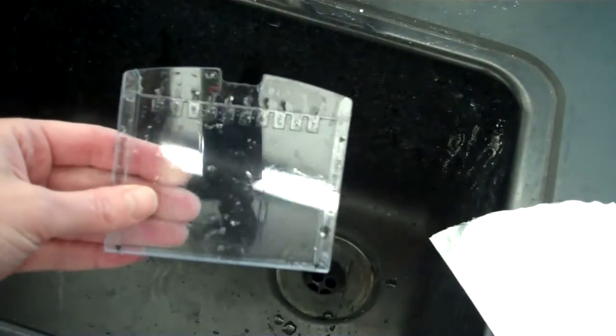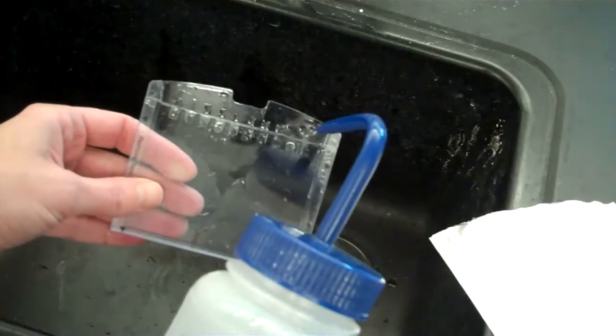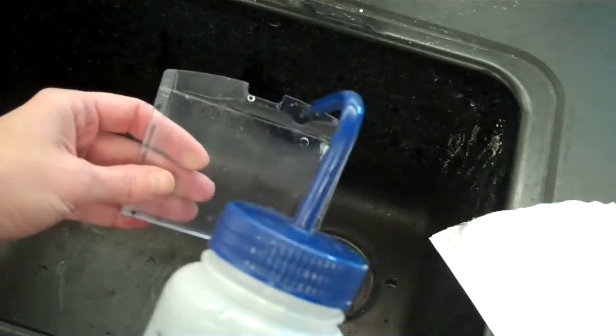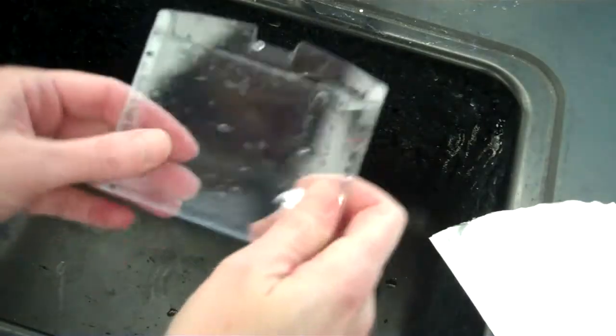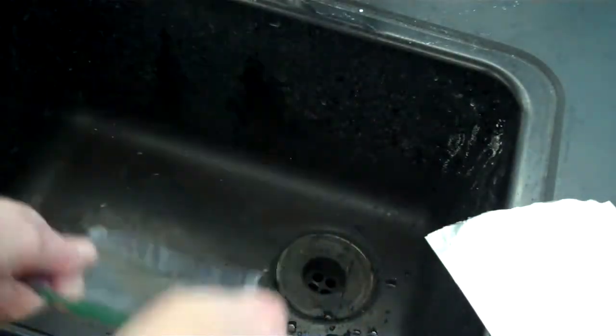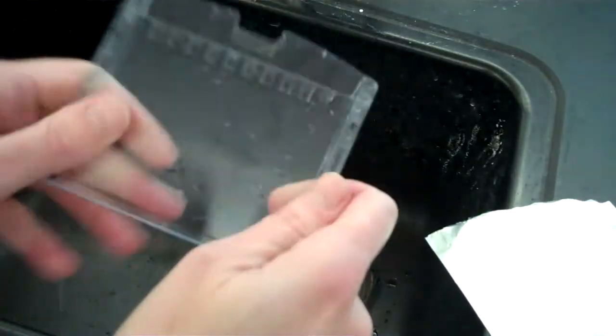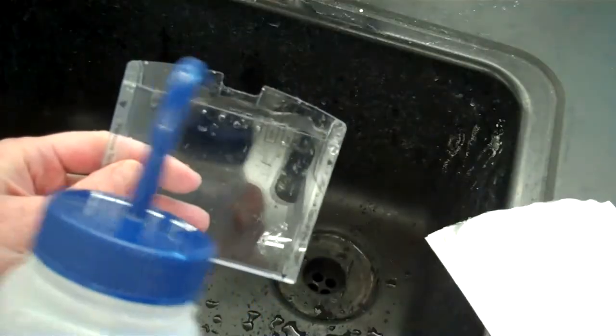Next we want to rinse the lanes. Take a bottle of deionized water and squirt some deionized water into the lanes. This is over a sink. And then grasp it firmly and flick. And that will remove the water from the lanes. Repeat this.